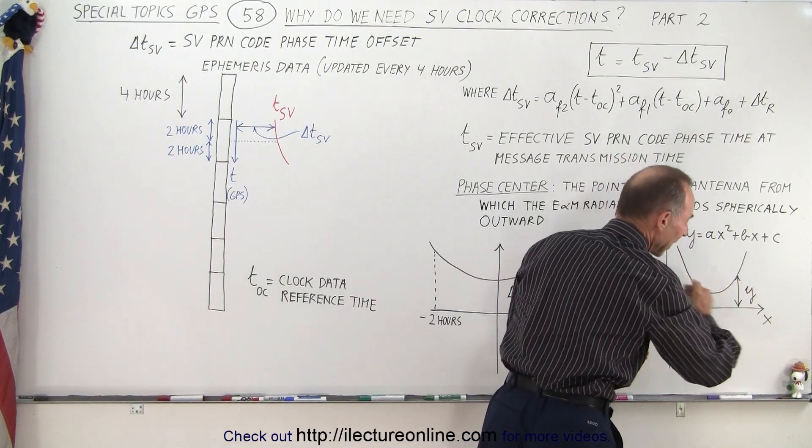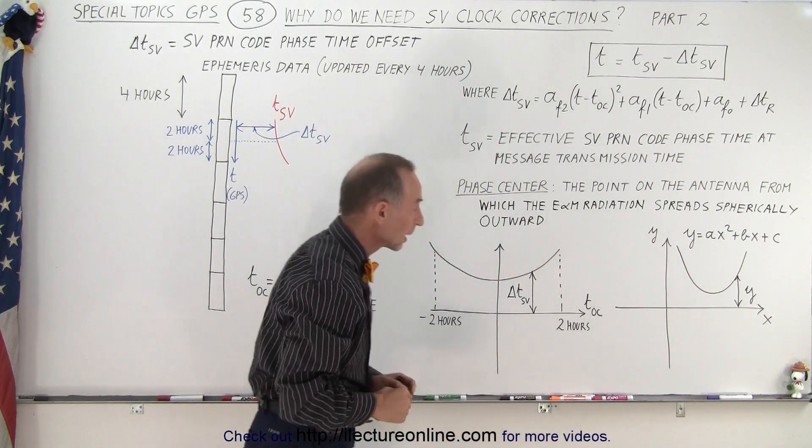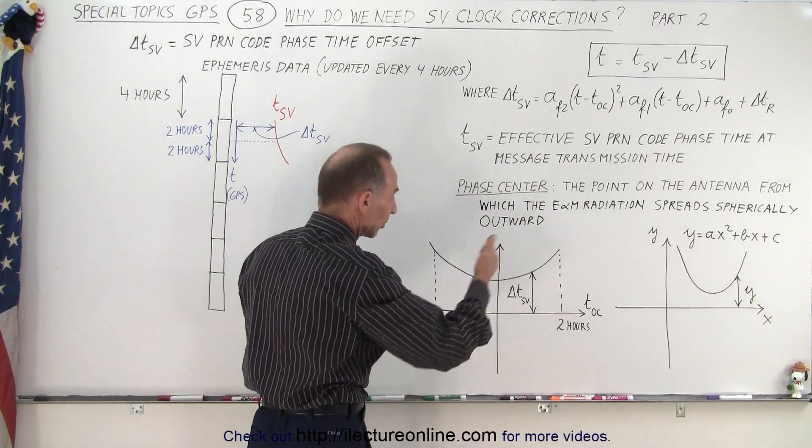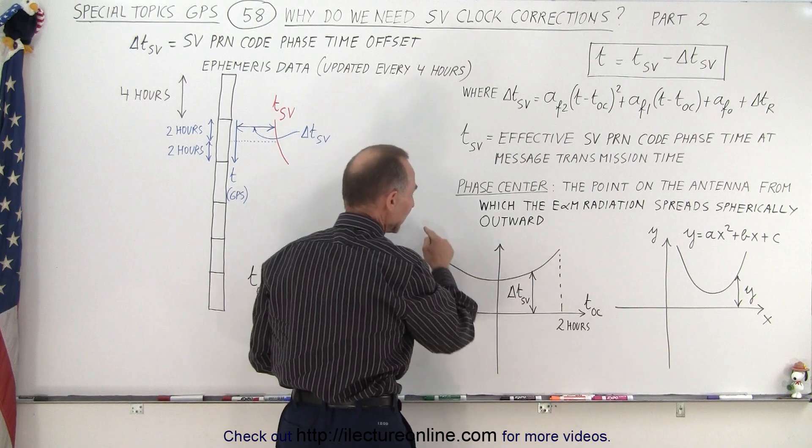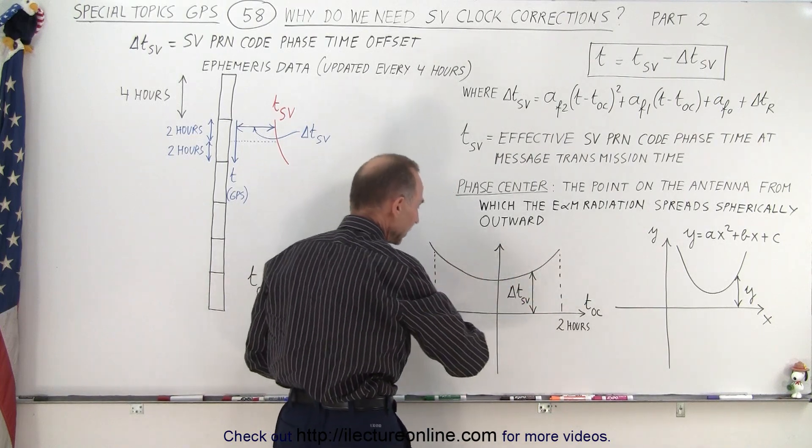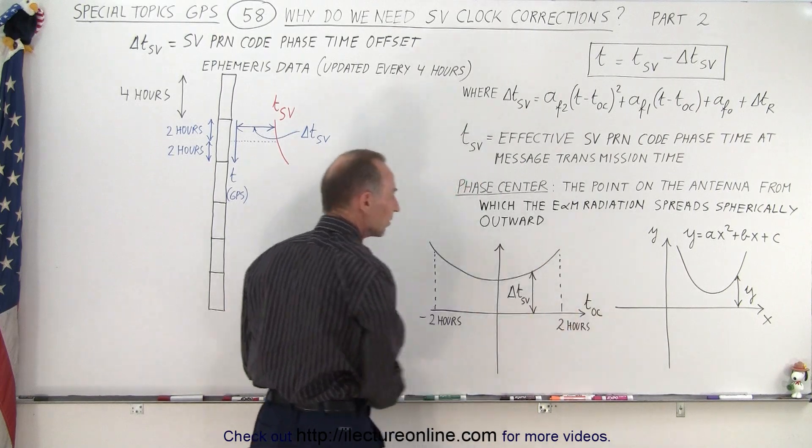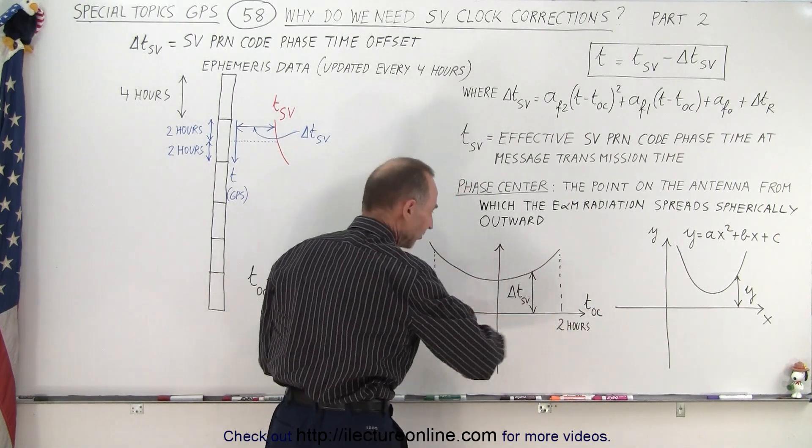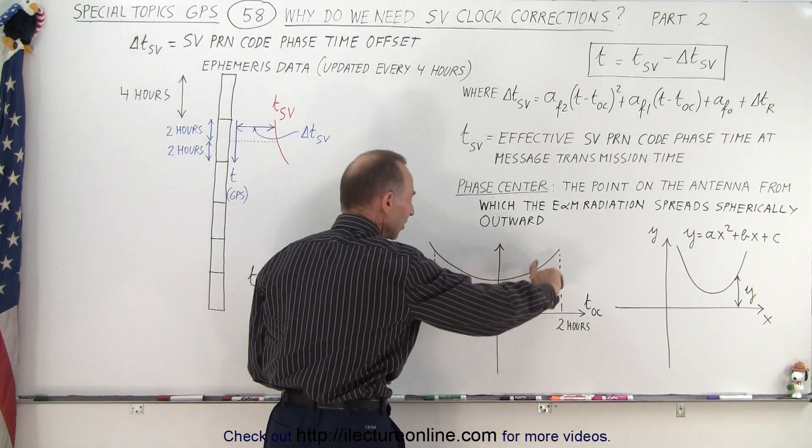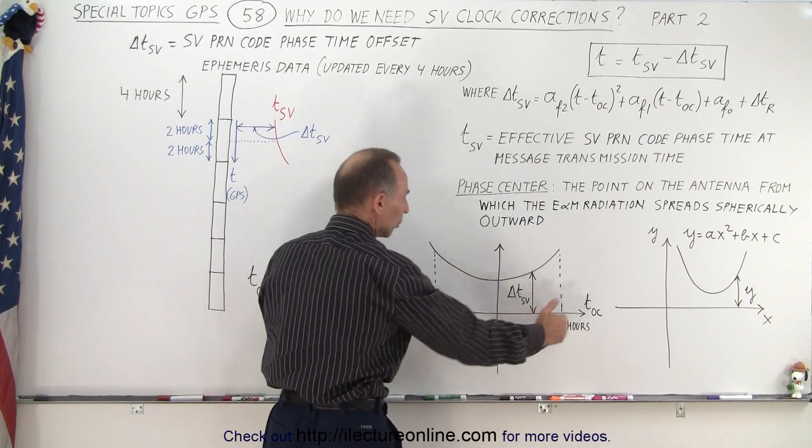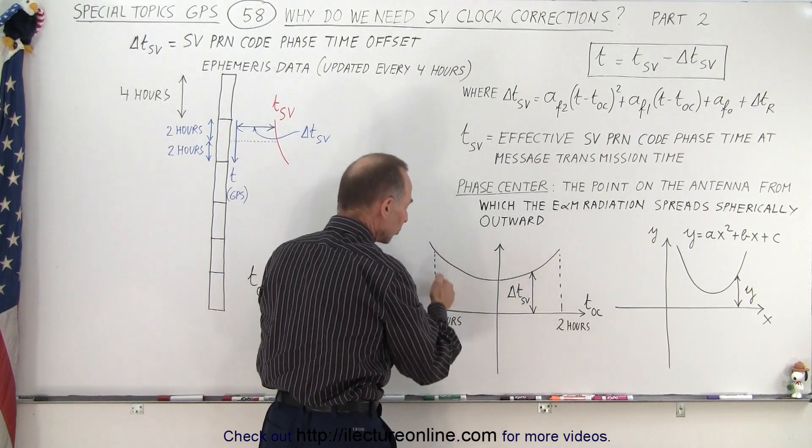Here we have a similar slope. Here we have the change in the SV time and here we have the steady as a rock time of the satellite, I mean of the GPS. And so the difference between them is the delta SV, and we have this four-hour window in which we try to calculate the difference as we go from this point in time to this point in time.